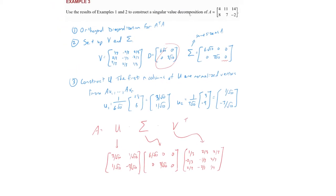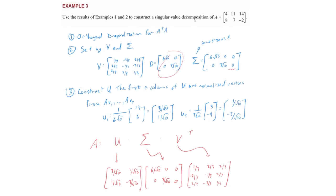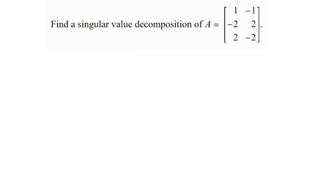We're going to look at one more example and then close on my favorite theorem. Example four has a different matrix A — finally a different one to work with for the first time in this section: A equals (1, -1; -2, 2; 2, -2). We'll encounter something a little tricky toward the end of the problem.